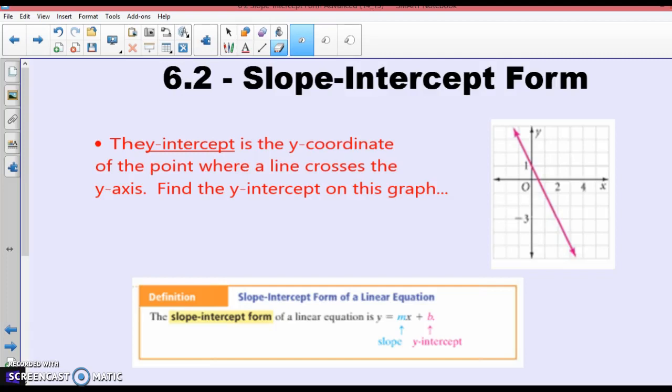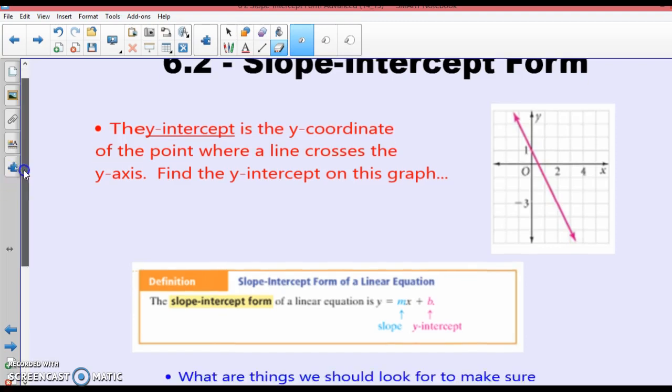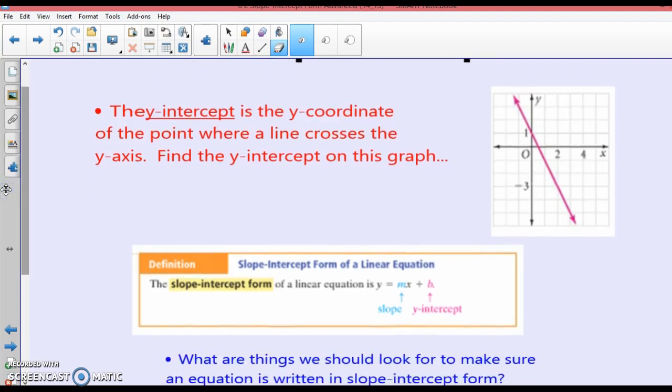Alright, today we're talking about Lesson 6.2 Slope-Intercept Form. The y-intercept is the y-coordinate of the point where the line crosses the y-axis. Find the y-intercept of this graph. It is the point (0,1), or we could say the y-intercept is just 1.